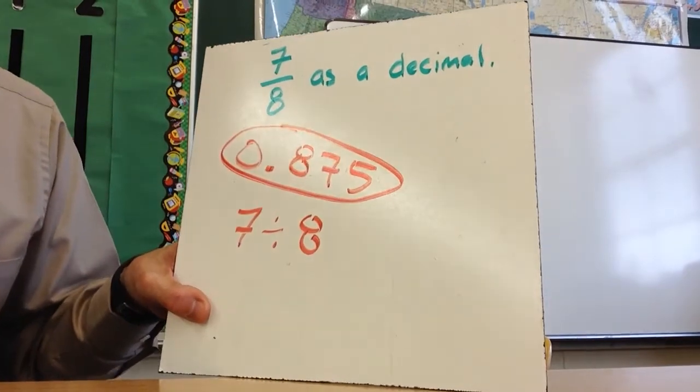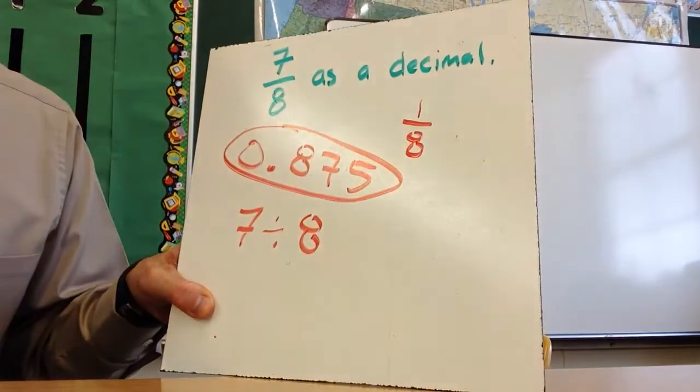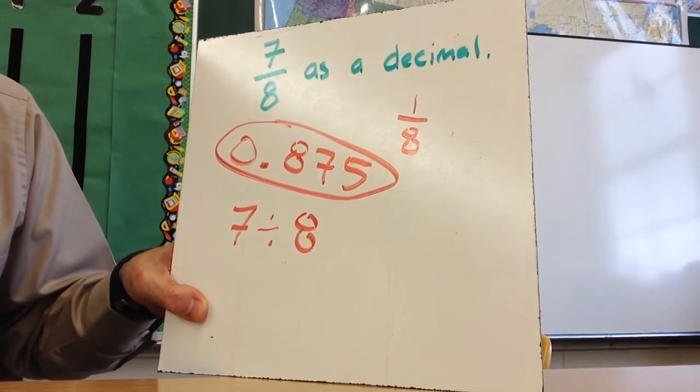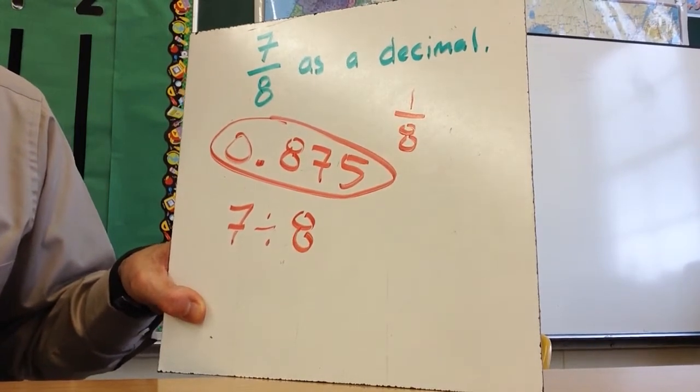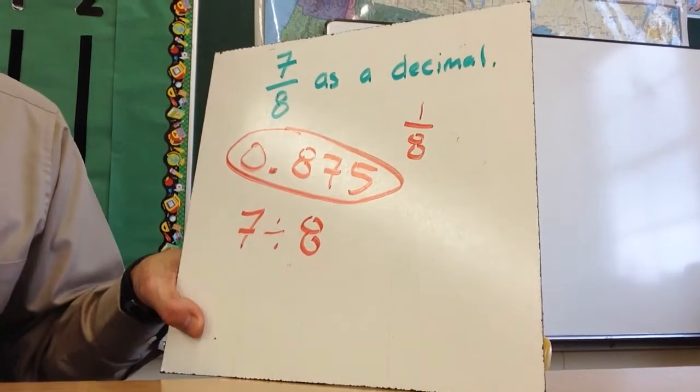Yeah, there are other ways to figure it out. For example, if you figured out what 1 8th was and you found that 1 8th was 0.125, you could take 0.125, you could multiply that times 7, and that would get you here.